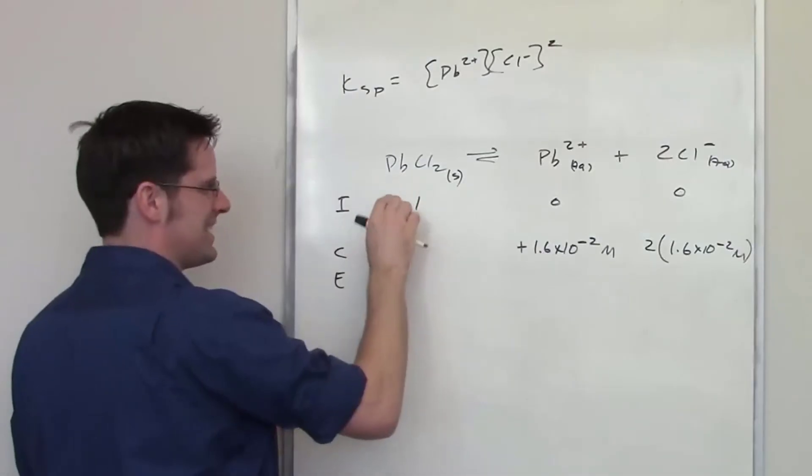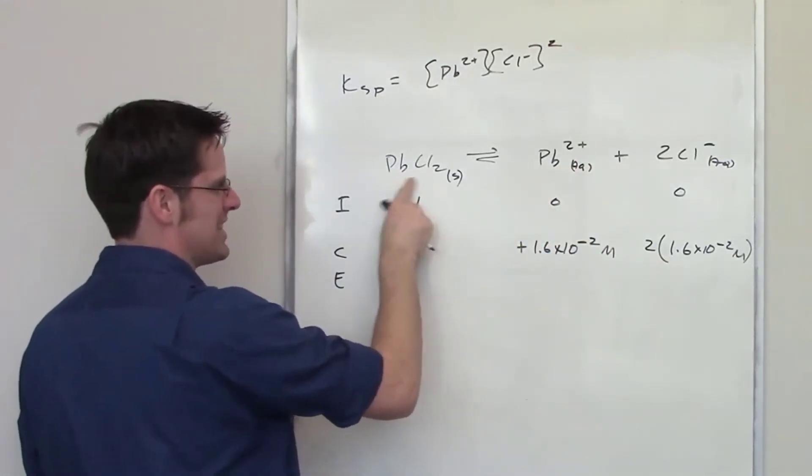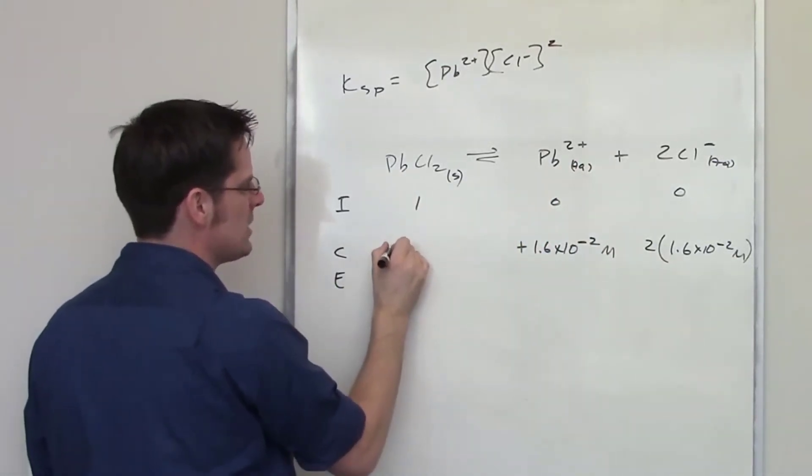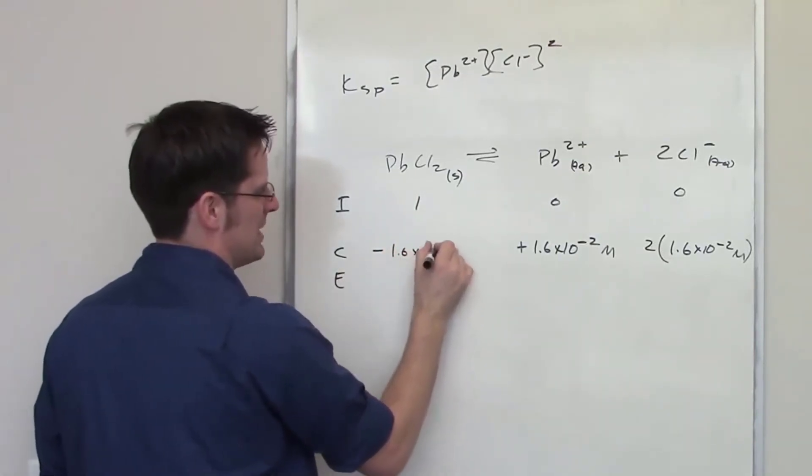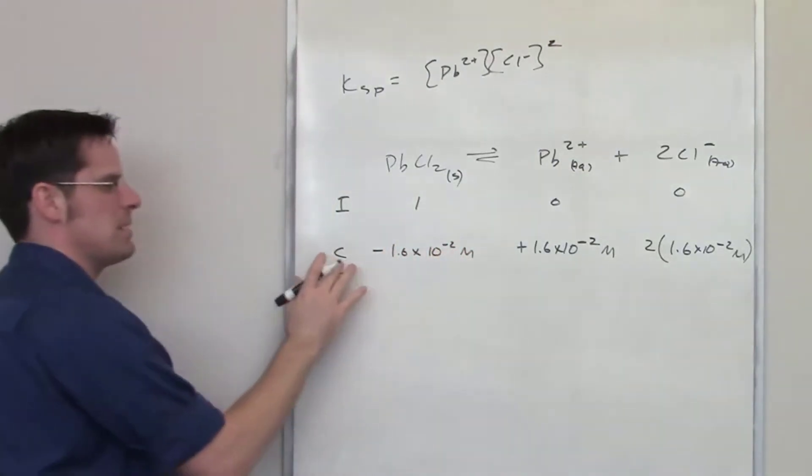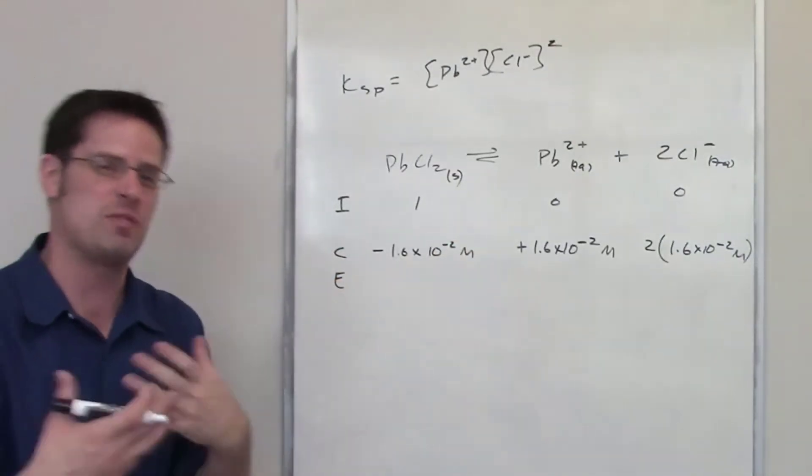Now because this is present in a 1 to 1 to 2 ratio, it also follows that the lead chloride is going to decrease by that same amount. So I'm going to have negative 1.6 times 10 to the negative 2 molar as being my change amount.